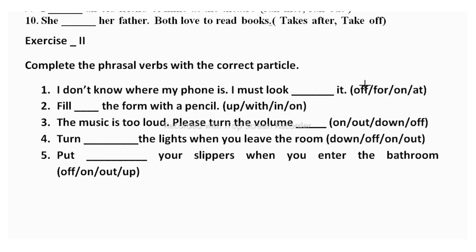In the second exercise, complete the phrasal verbs with the correct particle. First: 'I don't know where my phone is, I must look dash.' Options: off, for, on, at. 'Look for' means to search something. 'Look off' means to put off by one's facial expression; 'look on' means to watch without getting involved; 'look at' means to study carefully. The correct answer is 'look for.'